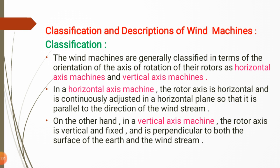In a horizontal axis machine, the rotor axis is horizontal and is continuously adjusted in a horizontal plane so that it is parallel to the direction of the wind stream. That means the axis of rotation and the direction of the wind stream are parallel to each other.